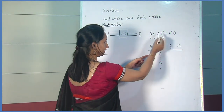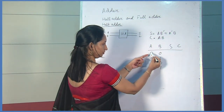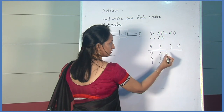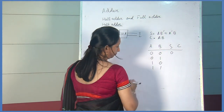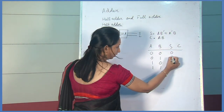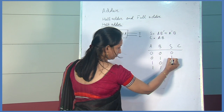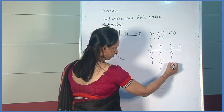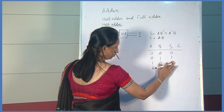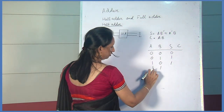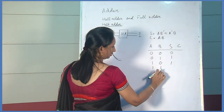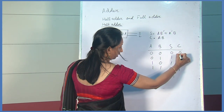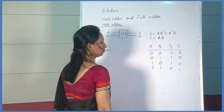These are the adder combinations. When 0 plus 0, we get sum 0. When 0 plus 1, the output sum is 1. When 1 plus 0, the sum is 1. And 1 plus 1 gives sum 0 with carry 1. The other carries are 0.